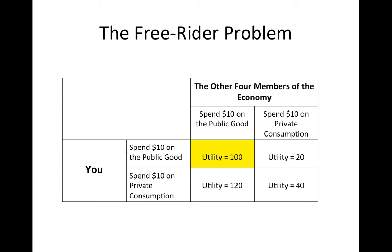Despite this, no one has an individual incentive to make the choice that would result in the Pareto efficient outcome. This is the essence of the free rider problem, and it is why public goods tend to be provided at suboptimal levels when left to the private market.